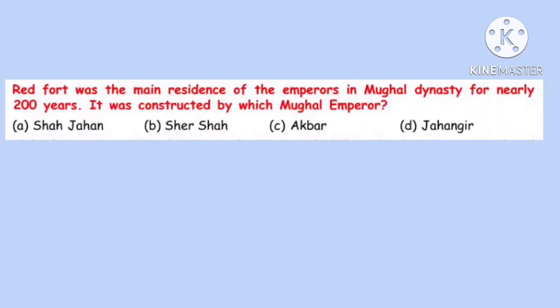Question 13. The Red Fort was the main residence of the emperors in the Mughal dynasty for nearly 200 years. It was constructed by which Mughal emperor? Correct option is A: Shah Jahan.